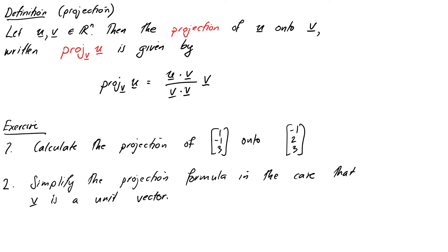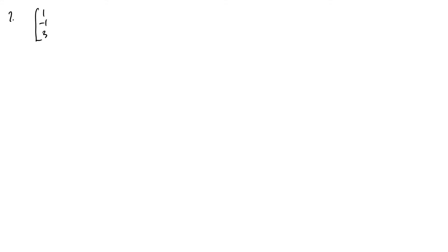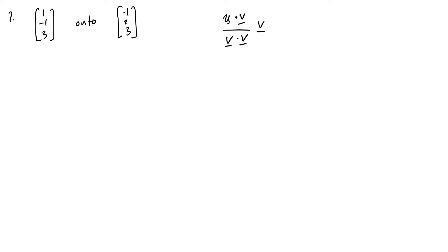Okay, so let's have a go. For the first one, we want to calculate the projection of (1, −1, 3) onto the vector (−1, 2, 3). Let's write down our formula again: u dot v over v dot v, all times the vector v. The easiest thing to do is to calculate these dot products first and then plug them into the formula. Let's write out the projection of u onto v. This one here will be our u, and this one here will be our v.